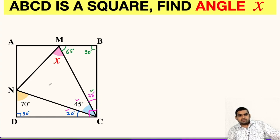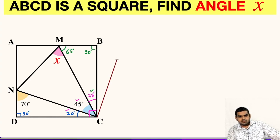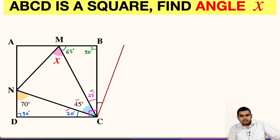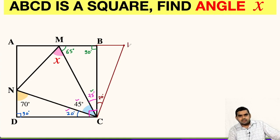Now we are very close to finding angle X. In order to proceed, we have to do one construction: draw a line segment from point C such that it makes a 20-degree angle — we stop at 20 degrees. This is our construction. Next, we will extend line AB so that it intersects this already drawn line segment, and let us name this point as point P.